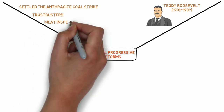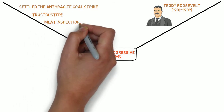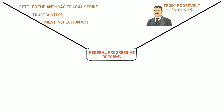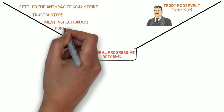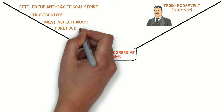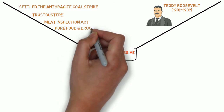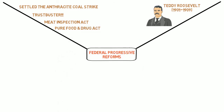Roosevelt responded to the public outcry after Upton Sinclair's publication of The Jungle in 1906. That year, he urged Congress to improve consumer safety by passing both the Meat Inspection Act and the Pure Food and Drug Act.